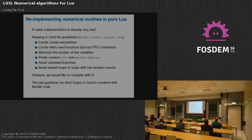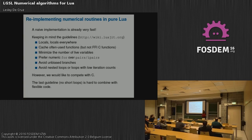If you naively re-implement something in Lua and run it with LuaJIT, it's already very fast. Key optimization guidelines: use locals, cache frequently used functions, minimize the number of live variables (don't put all declarations at the top — this isn't Fortran), use numeric for instead of pairs for performance, avoid unpredictable branches, and avoid nested loops or loops with very low iteration counts. That last point is tricky to combine with flexible code.